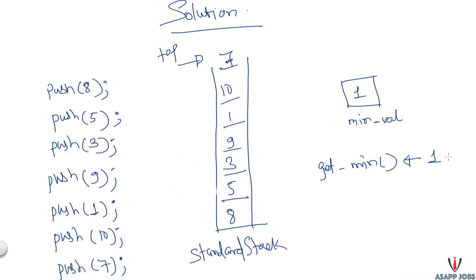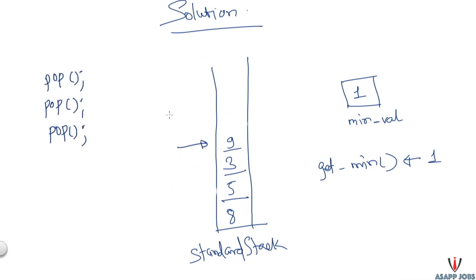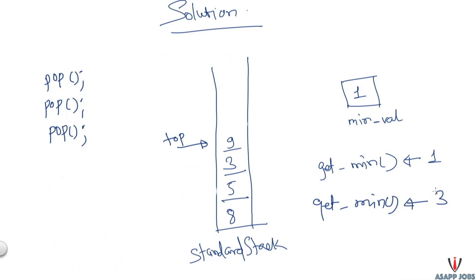If we do three pop operations one by one, our stack will have fewer elements with nine as the top. While doing a pop, can we update minValue with the previous minimum? The answer is no — we have no record of the history of minimum element values. So this variable will still hold one, and calling getMin will incorrectly return one instead of three. That implies we cannot solve this problem with just one variable.